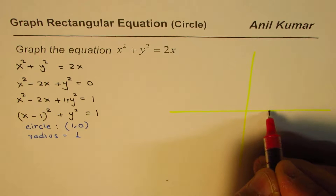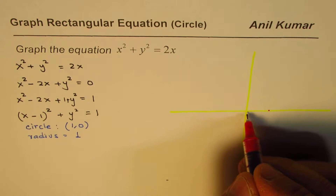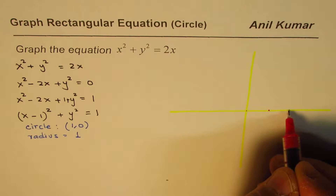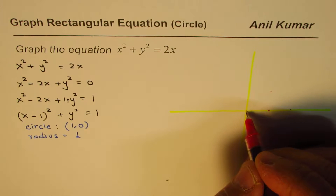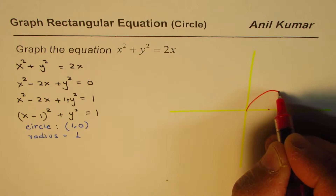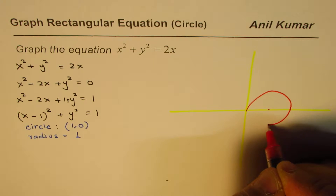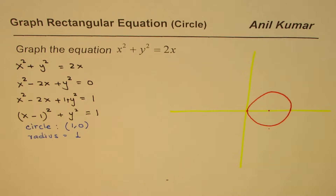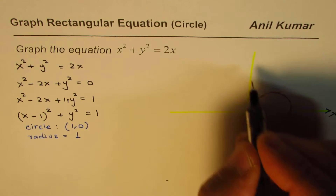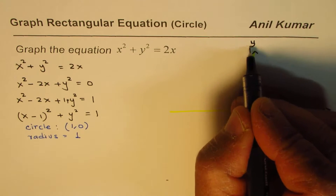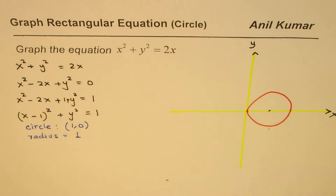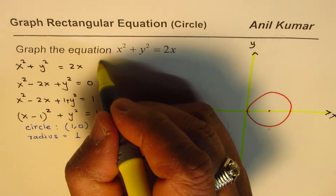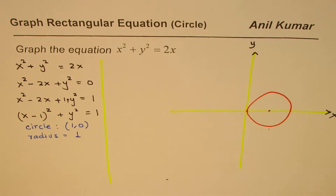So this is the center of the circle, and that is the circle — sketched on a rectangular graph with the x-axis and y-axis. We get this circle as a result of this particular equation. That is one way of sketching this equation.